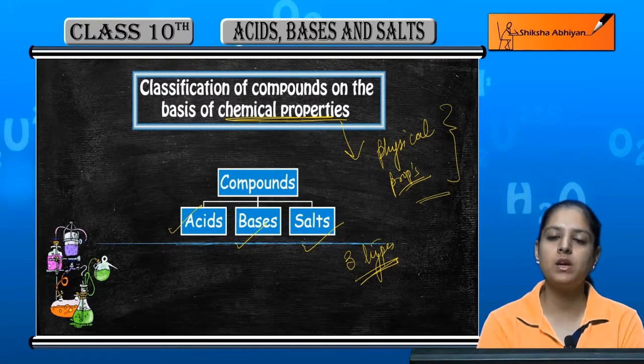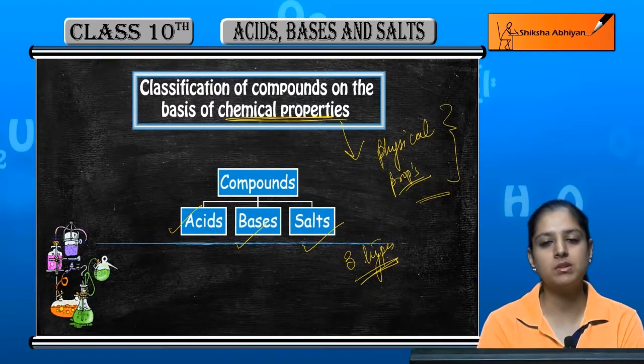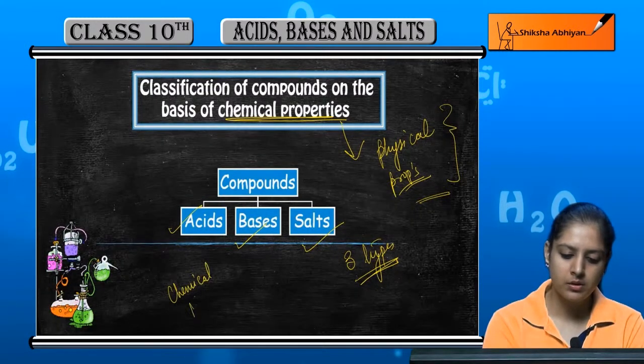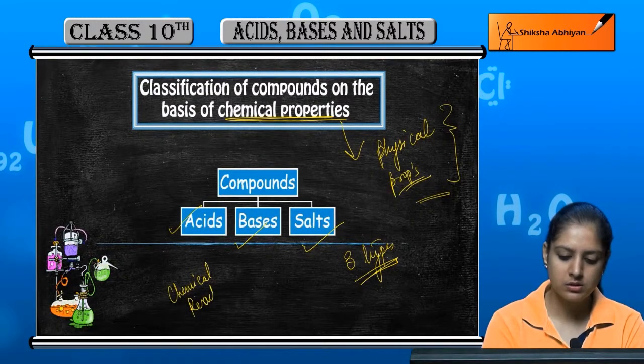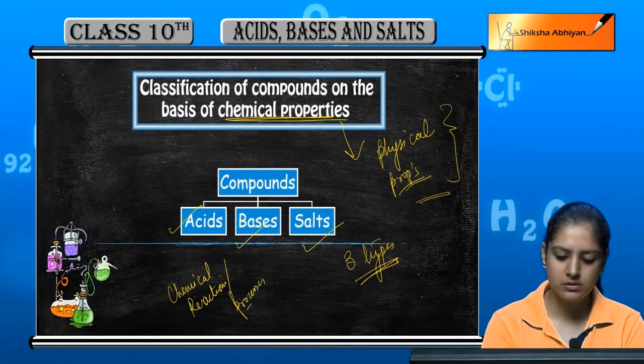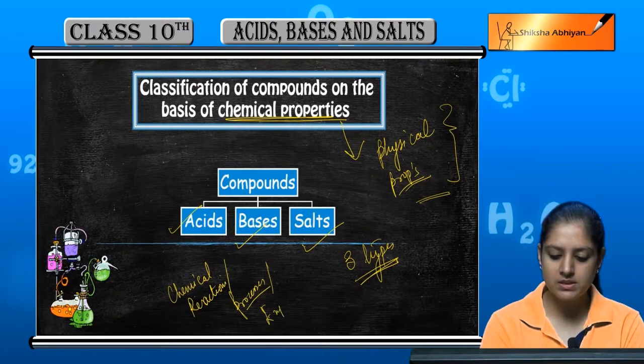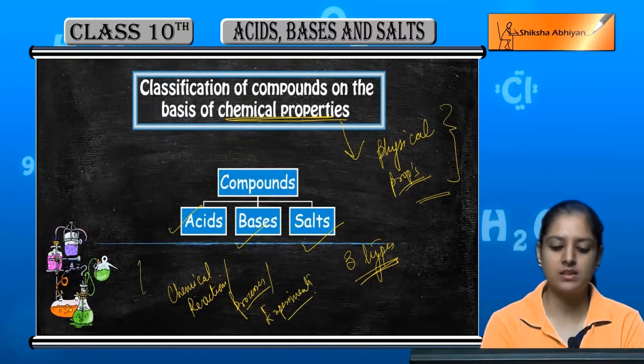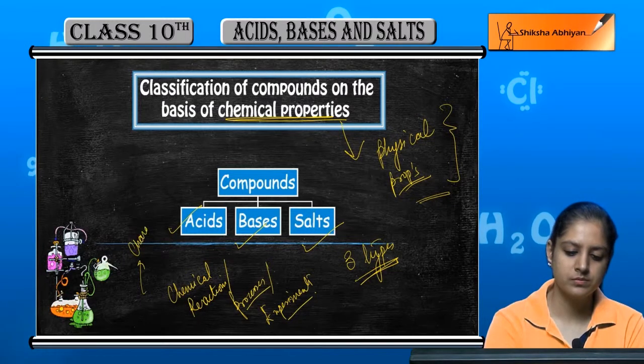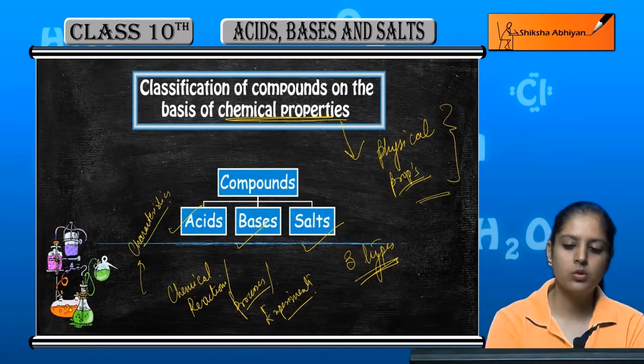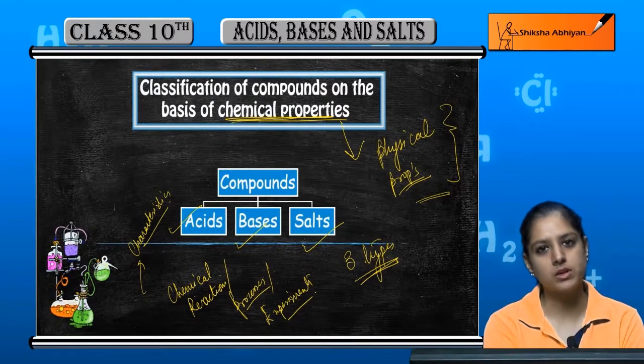But by chemical reactions or processes or experiments, some characteristics they are called chemical properties.